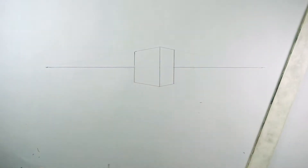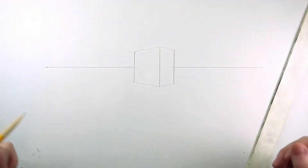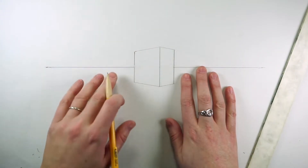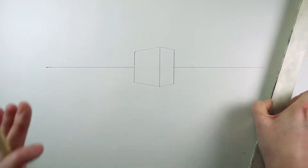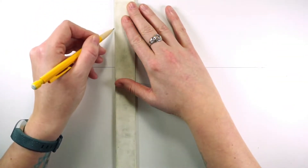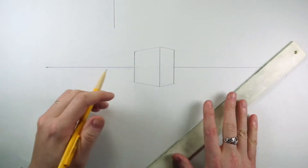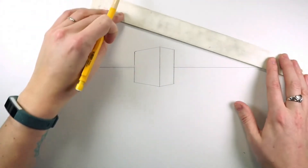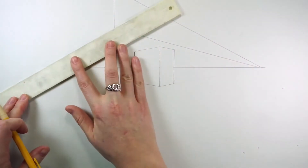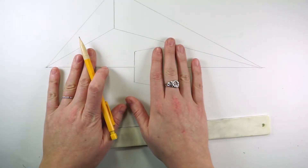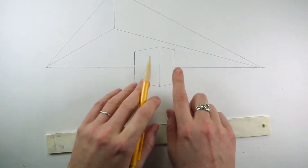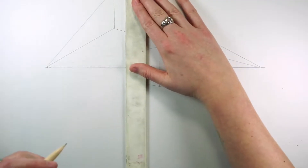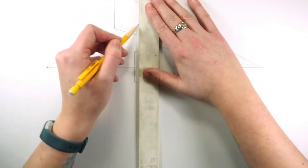We have our first box in two-point perspective. Now if we want a box above the horizon line, keep in mind we're looking up at it — the horizon line is at eye level. When something is above it, we'll see three sides: the two sides and the bottom, because we're looking up at it. Same principle to get started: connect the top and bottom of our vertical line to the two vanishing points. From here we'll start making the parallel lines to the sides — same steps as the first box: converging lines, then parallel lines.